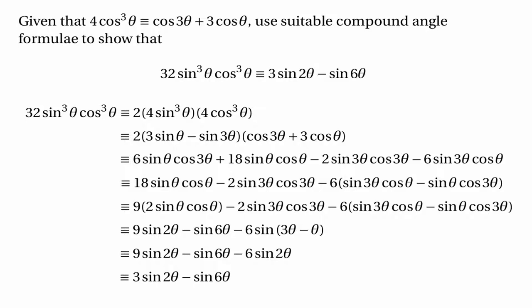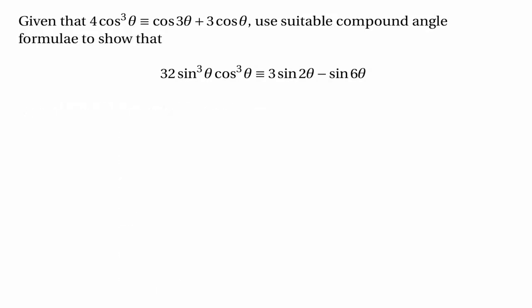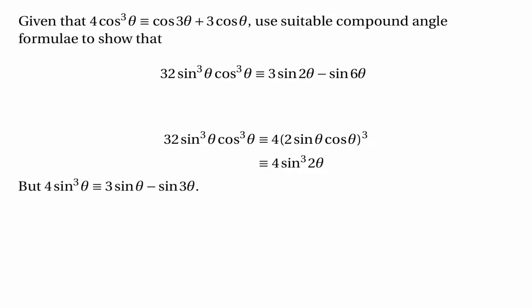Note that there's actually a much simpler way of proving this. We can say that 32 sin³θ cos³θ is 4 times the cube of (2 sin θ cos θ). But 2 sin θ cos θ is simply sin 2θ, so this is 4 sin³(2θ). We know from before that 4 sin³θ equals 3 sin θ minus sin 3θ, so 4 sin³(2θ) must be 3 sin 2θ minus sin 6θ, which shows that 32 sin³θ cos³θ equals 3 sin 2θ minus sin 6θ, much more simply.